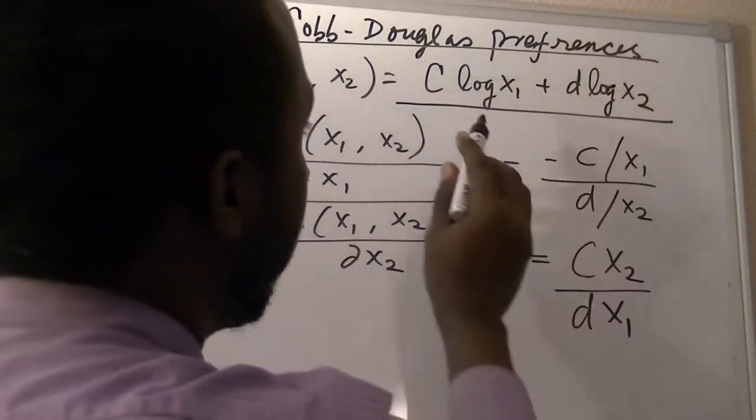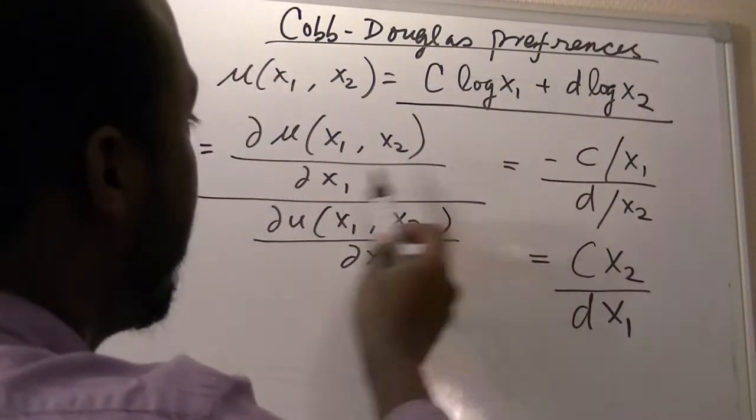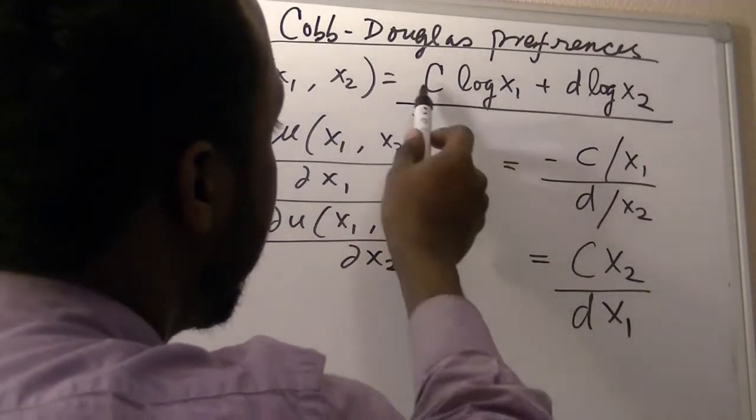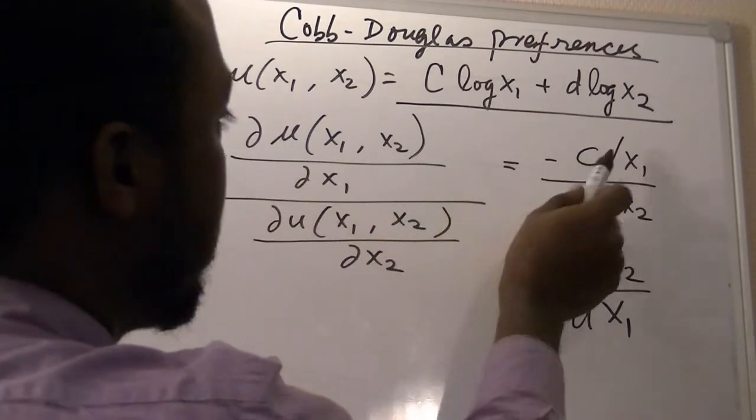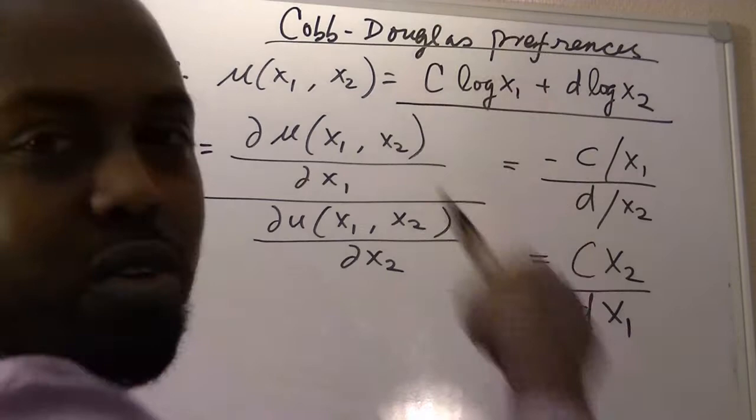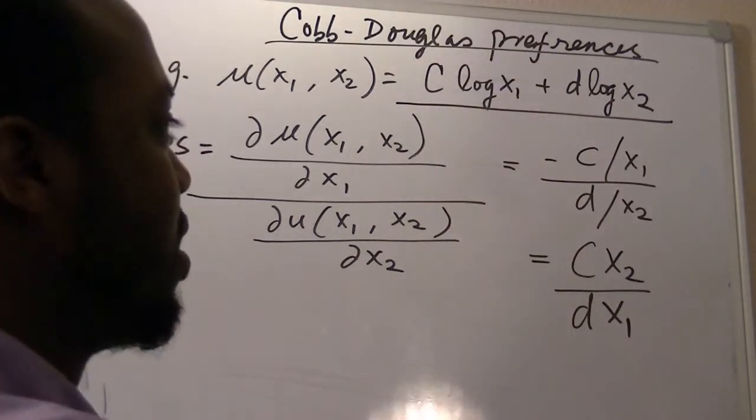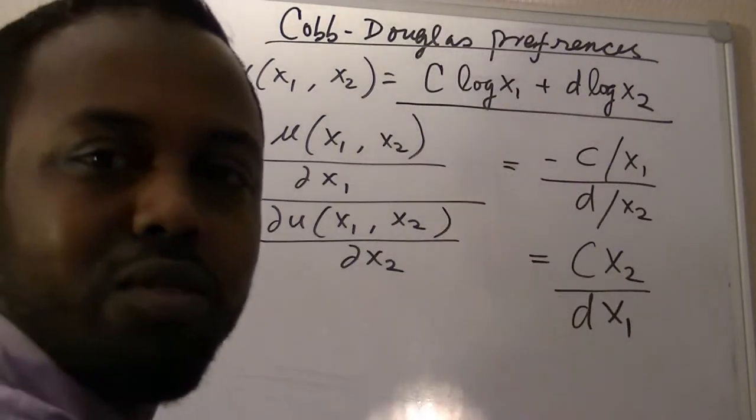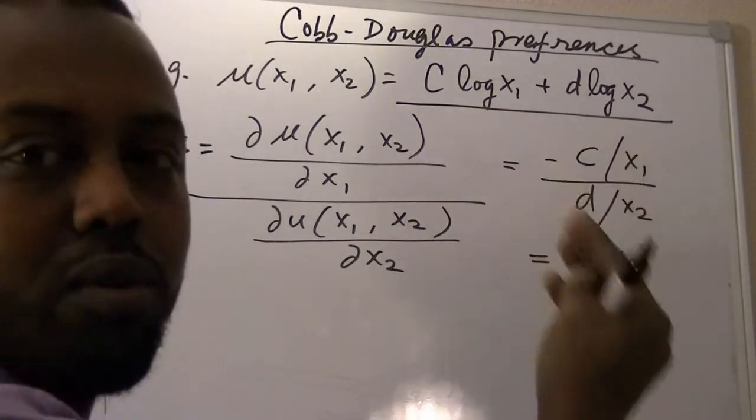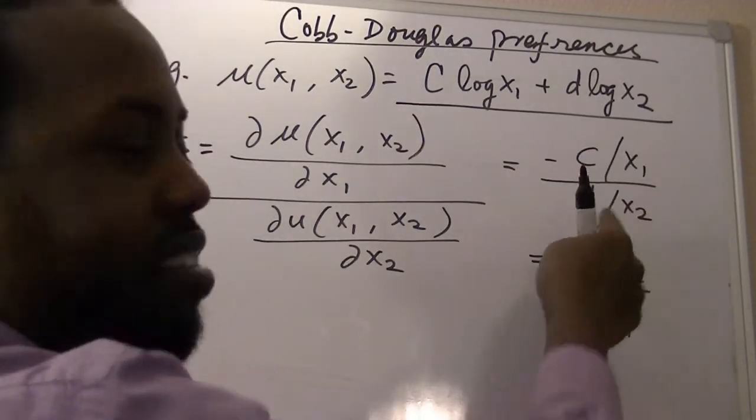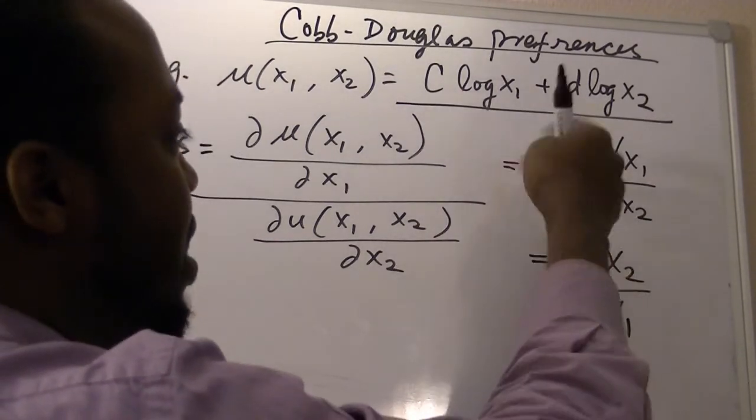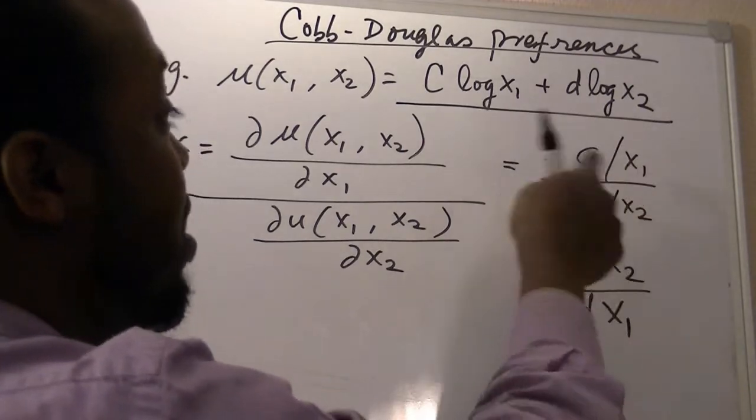And now, if we use this formula and apply it on here, we get minus c over x1. Remember, minus is just to remind us that in order to remain on the same indifference curve, which means in order to have a constant utility, the consumer, by choosing more of x1, must decrease the consumption of x2. So this is just a convenient sign.